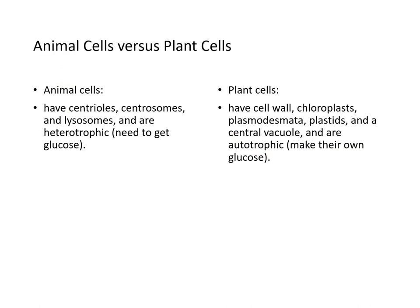Animal cells have centrioles, centrosomes, and lysosomes, and are heterotrophic — they must obtain glucose by eating. Plant cells have cell walls, chloroplasts, plasmodesmata, plastids, and a central vacuole, and are autotrophic, meaning they make their own food.